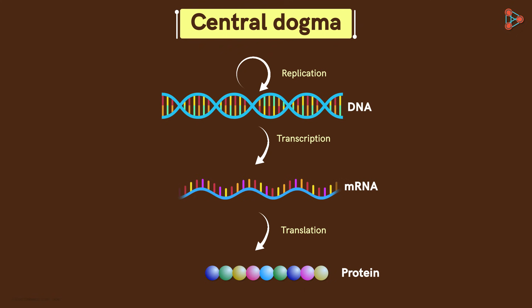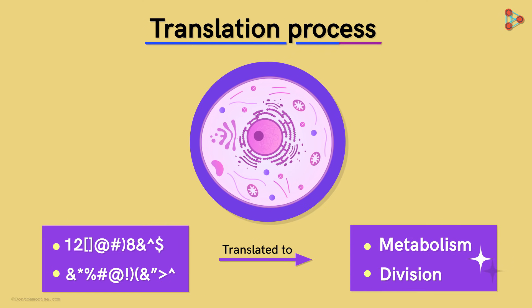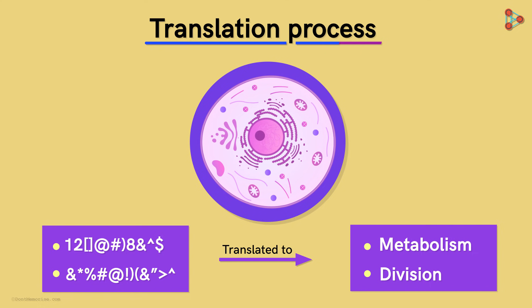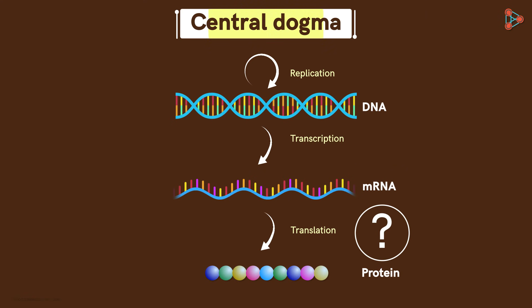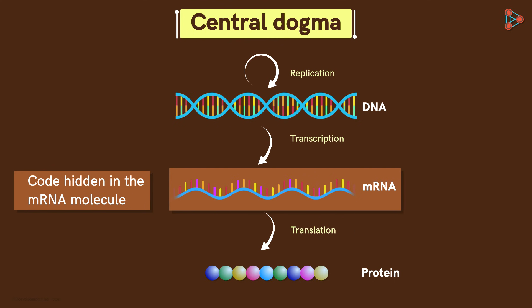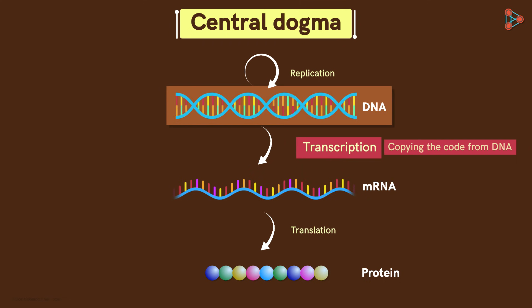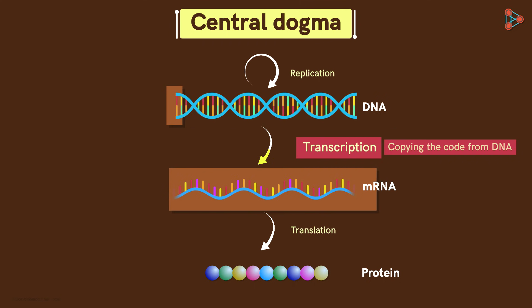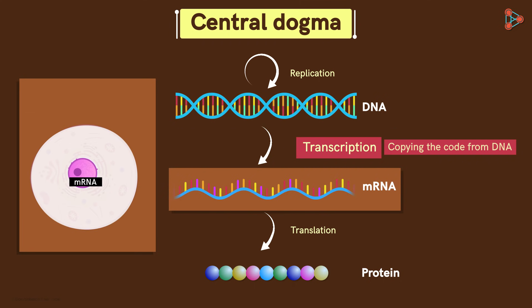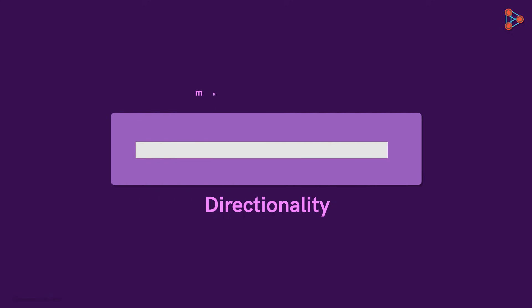As the name suggests, translation means converting something into a simpler, understandable form. What's getting translated here? The code hidden in the mRNA molecule. The process of transcription helps in copying the code written on the DNA, forming the mRNA. Now the mRNA comes out of the nucleus through the nuclear pore and enters the cytoplasm, where the process of translation begins. To begin with, let's find out the directionality of this mRNA molecule.